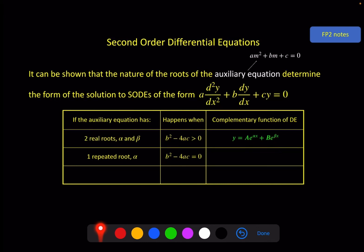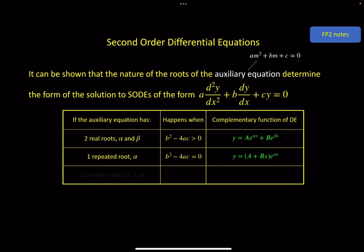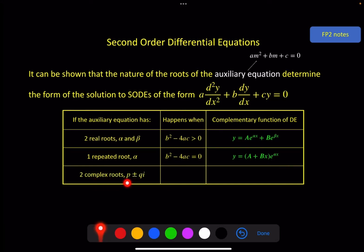However sometimes you only get one root, it's a repeated root α, and this happens when b² - 4ac = 0. In this case if you tried using this format you would have e^(αx) and another e^(αx) and they would just add together and it wouldn't give you two parts. In this case the solution is of this form, so you've got (a + bx)e^(αx).